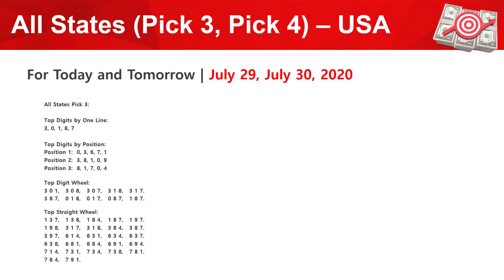All States PIC 3 — Top Digits by one line: 3, 0, 1, 8, 7. Top Digits by position — Position 1: 0, 3, 6, 7, 1. Position 2: 3, 8, 1, 0, 9. Position 3: 8, 1, 7, 0, 4.